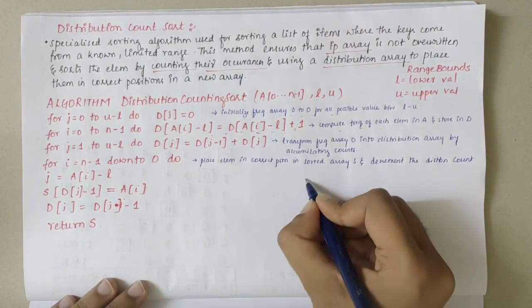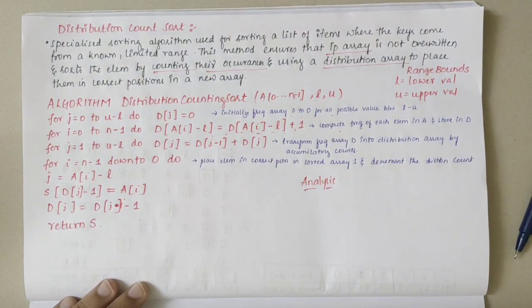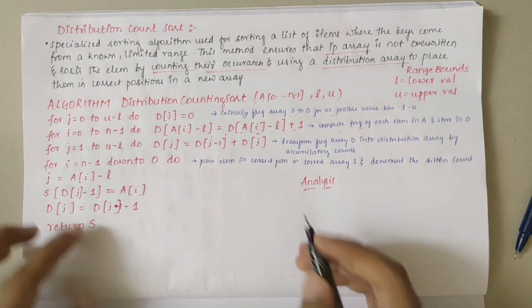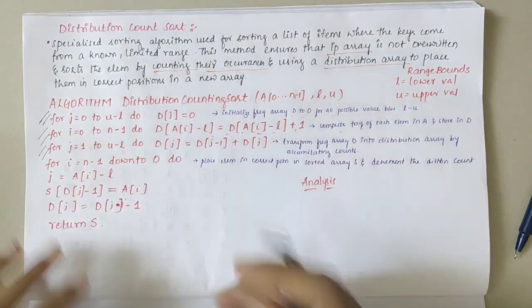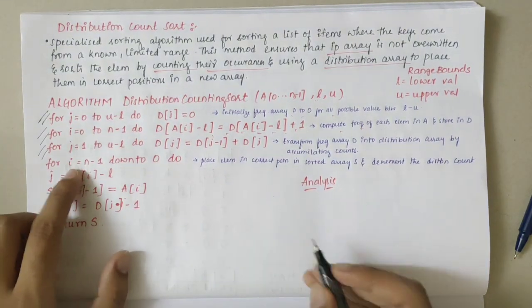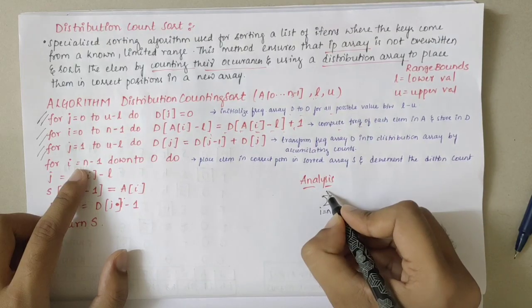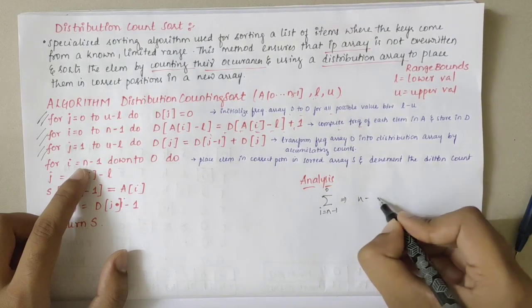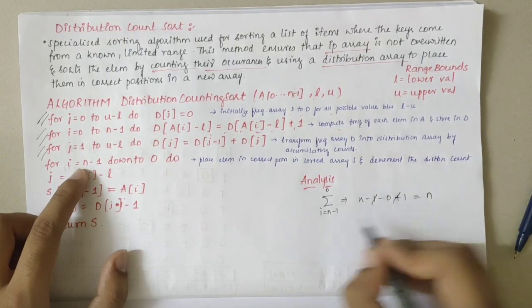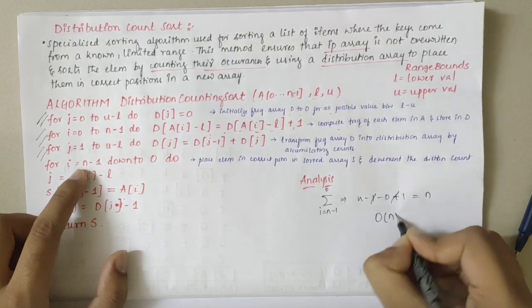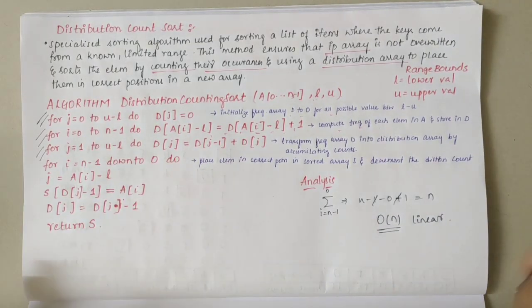For the analysis of distribution count sort, the main loop iterates from n minus 1 to 0. With upper limit minus lower limit plus 1 giving n, the time complexity is O(n) — linear time. Now let's look at a problem to illustrate this.